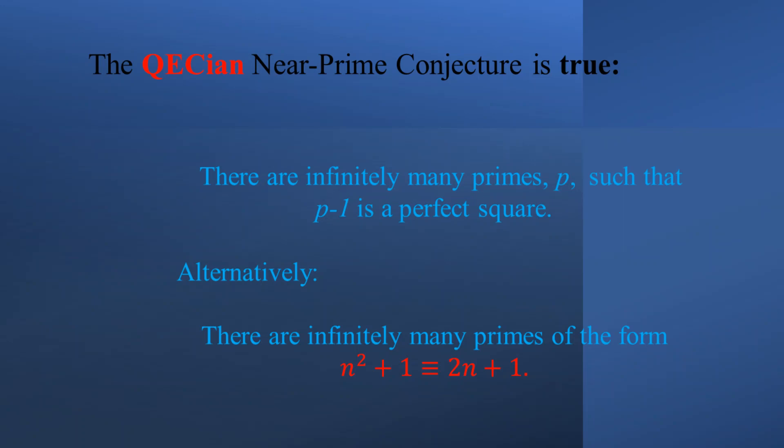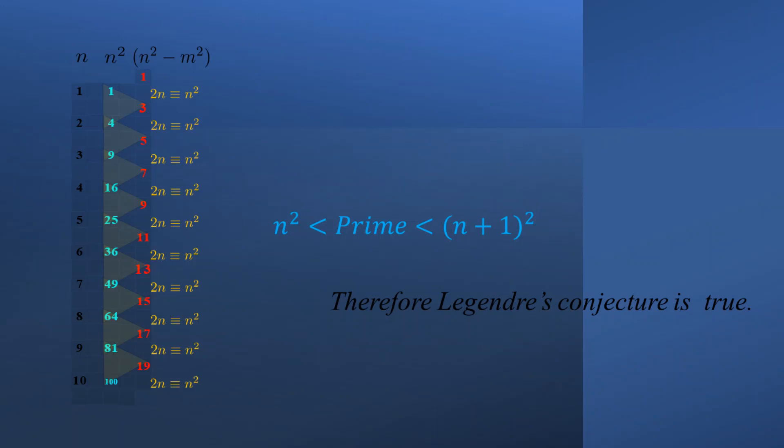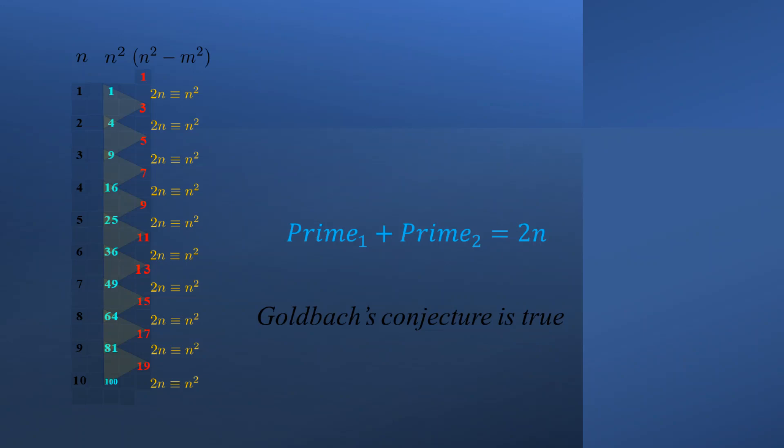There are infinitely many primes P such that P minus 1 is a perfect square or quadrants in the case of the Quikian spiral. There are infinitely many primes of the form 2n plus 1. And since it is true that all odds and primes are equivalent, then Legendre's conjecture and Goldbach's conjecture are true. And if Goldbach's conjecture is true, then the twin prime conjecture is true for an infinitely large even number.